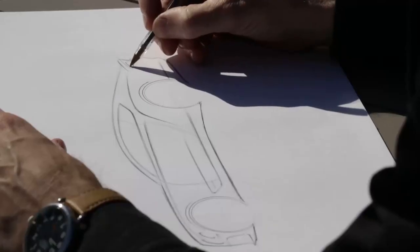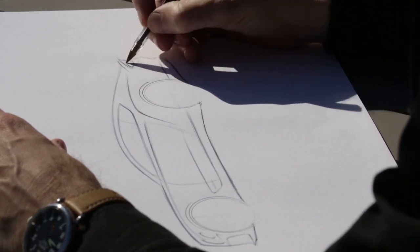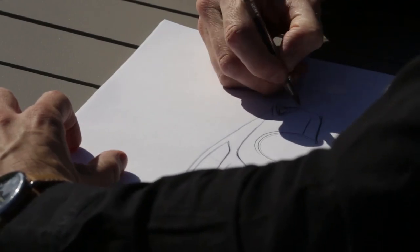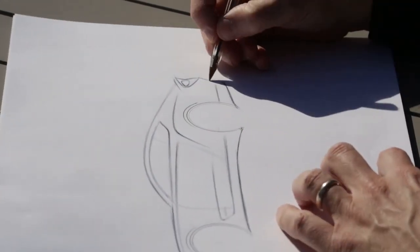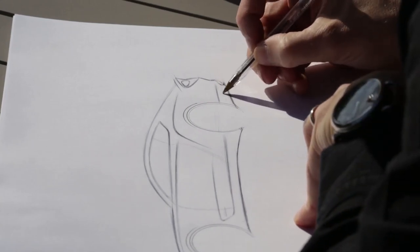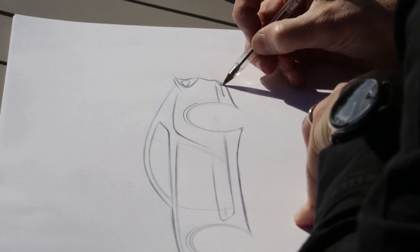So those afterburner ellipse shapes for the rear lights sit within that horseshoe at the rear. And you've got that nice muscle feature that goes into the exhaust.